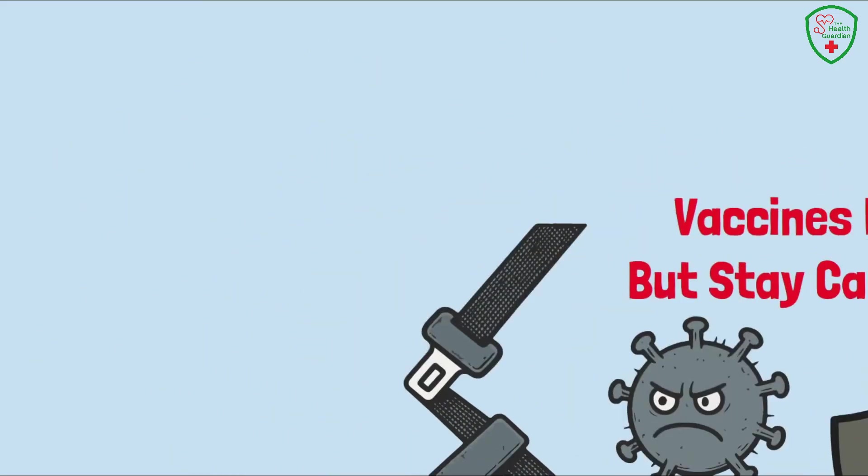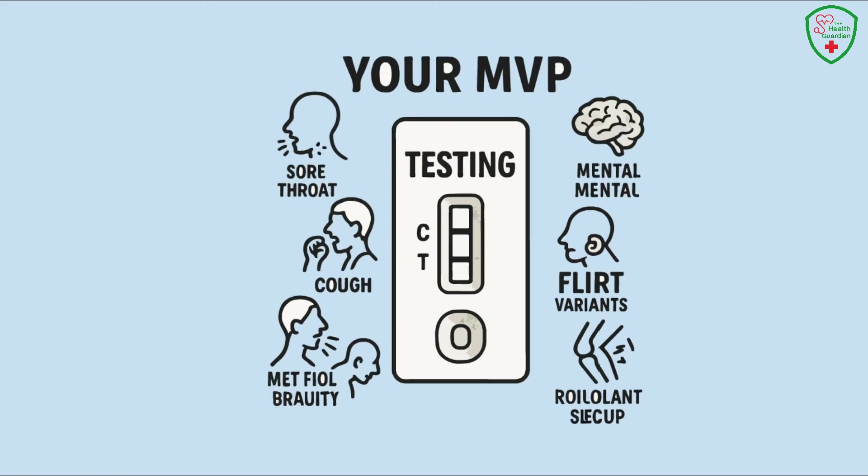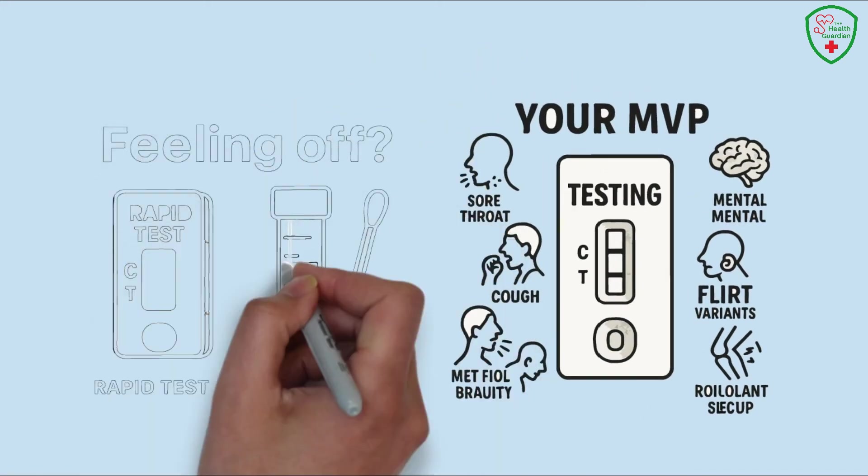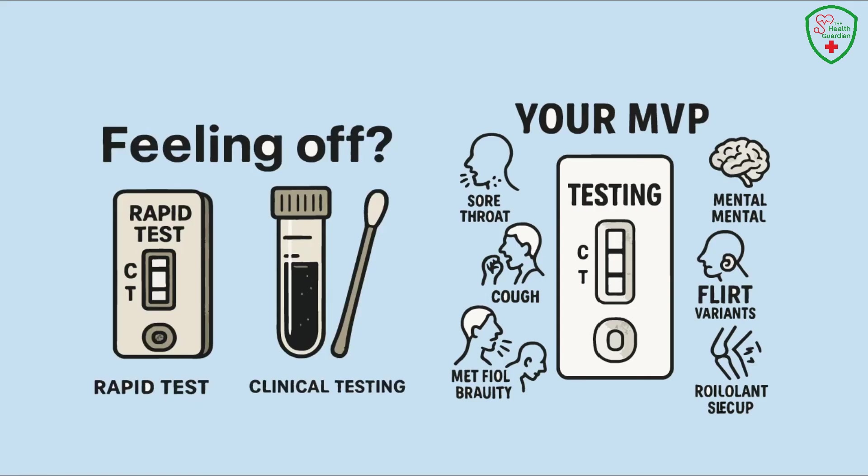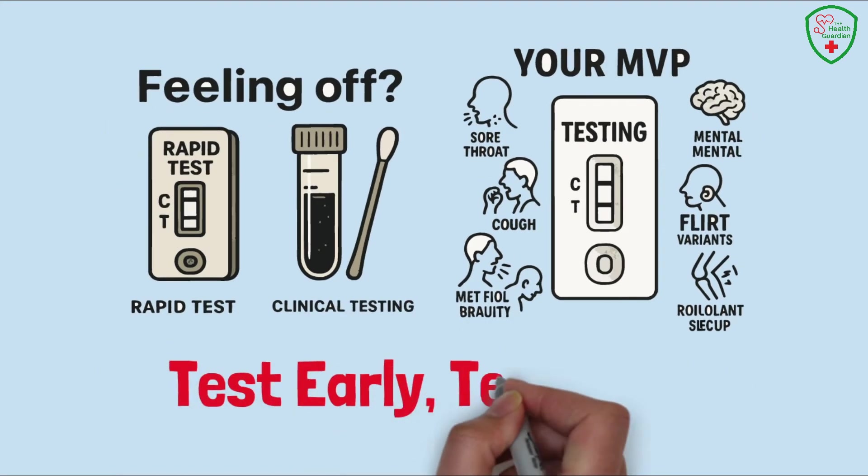With all these symptoms, old, new, physical, mental, testing is your MVP, especially with FLIRT variants spreading. Feeling off? Grab a rapid test from your local pharmacy or swing by a clinic for a PCR test. It's like having a superpower to detect the virus before it spreads or gets worse.